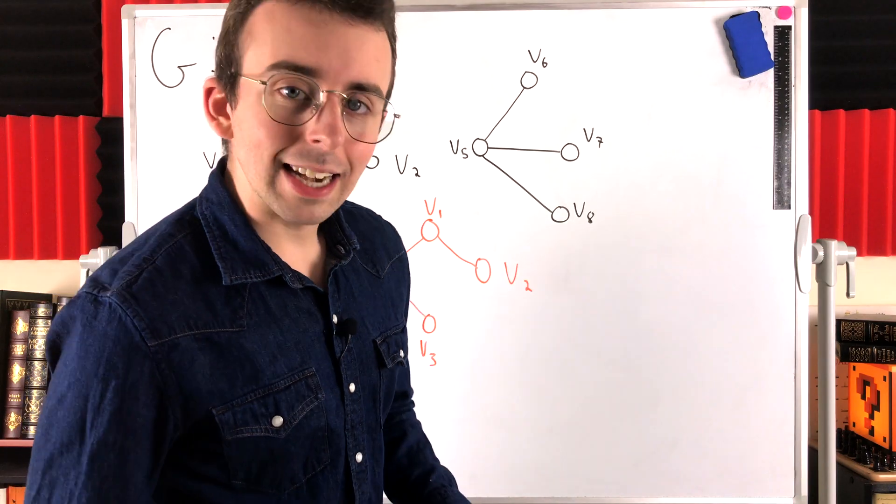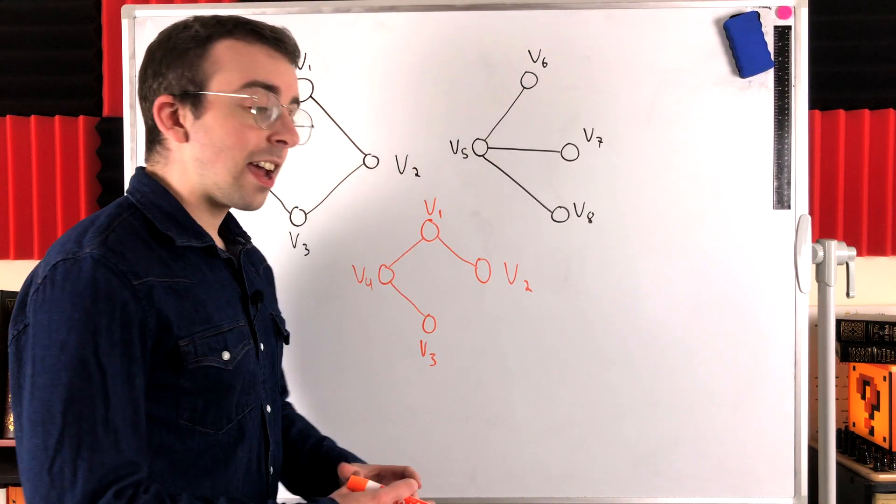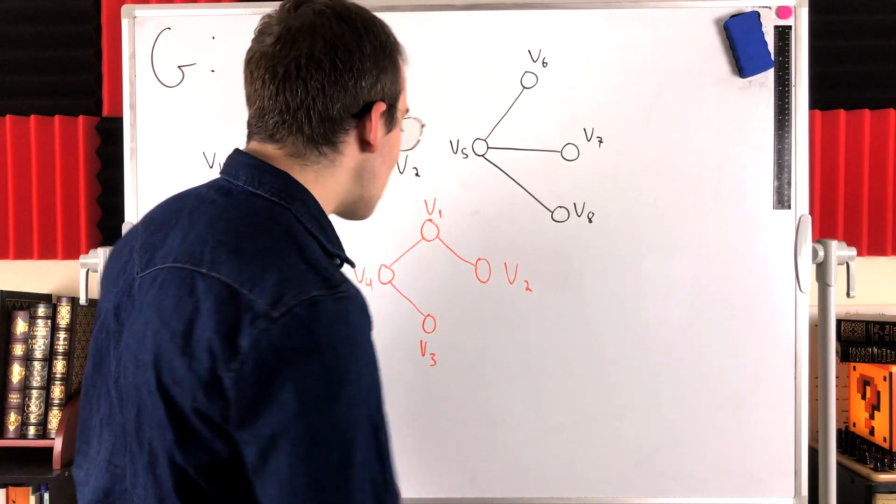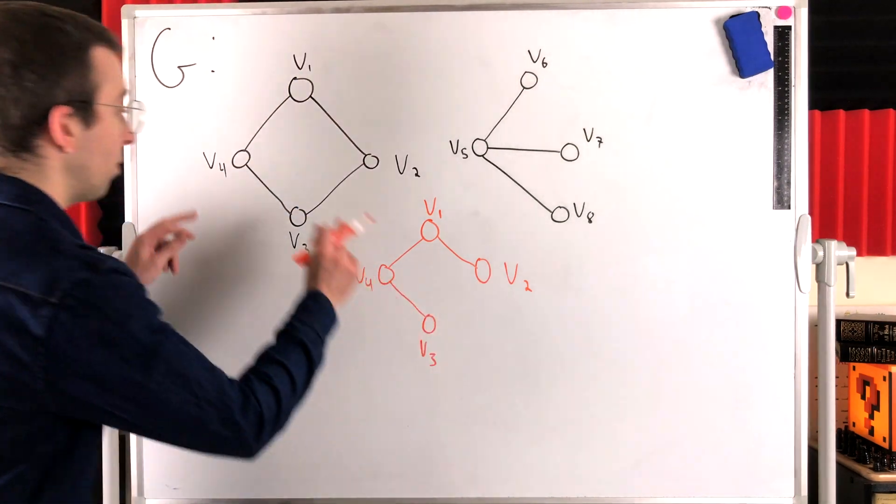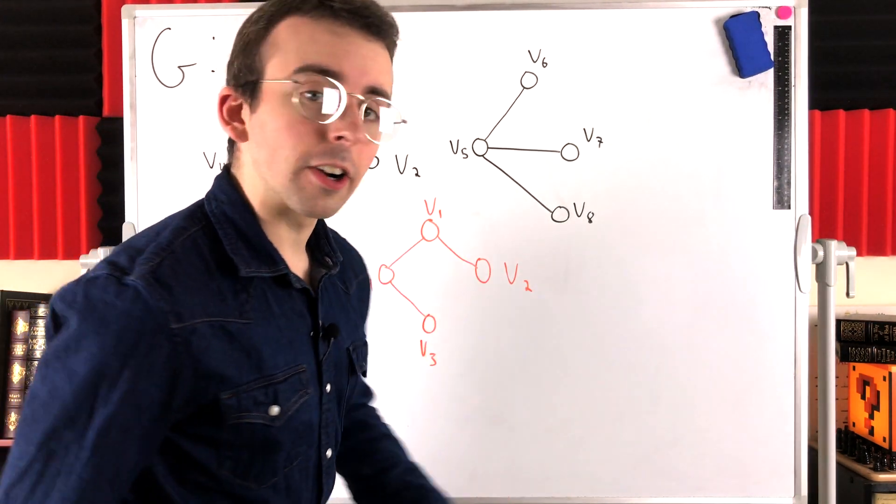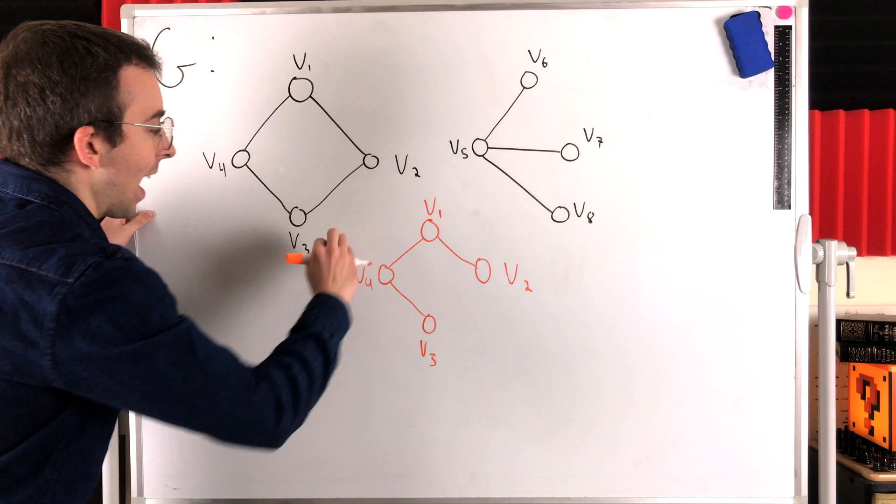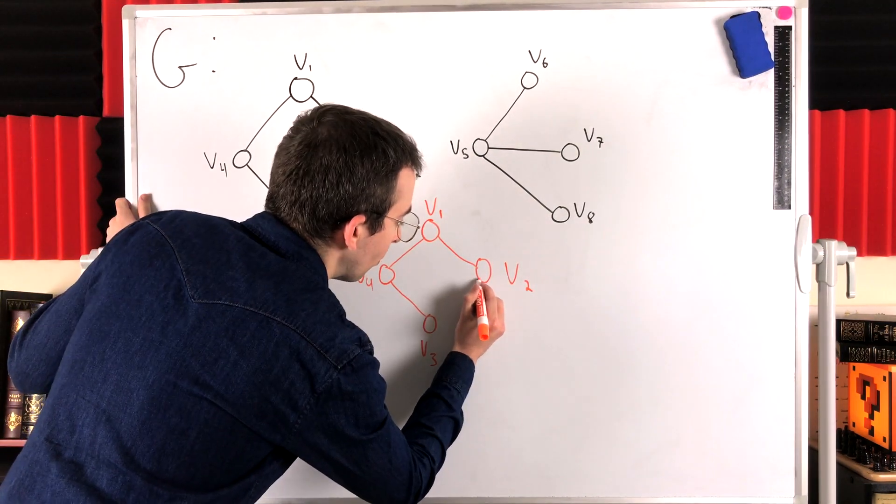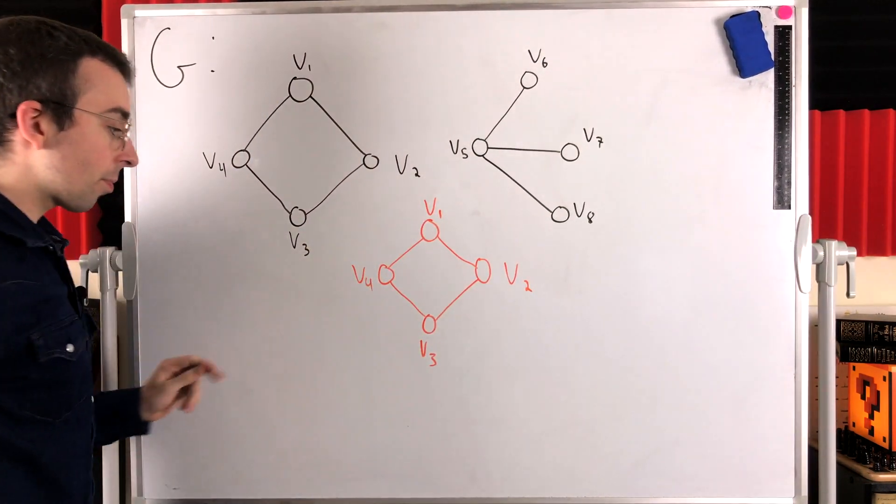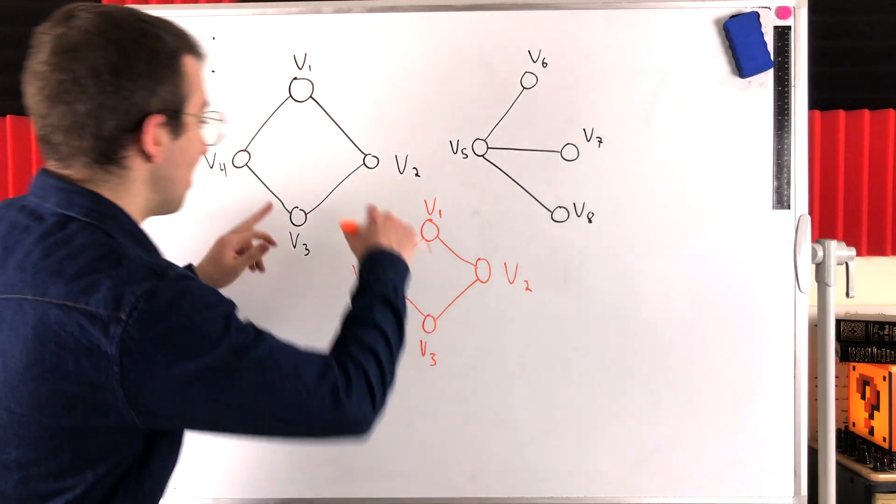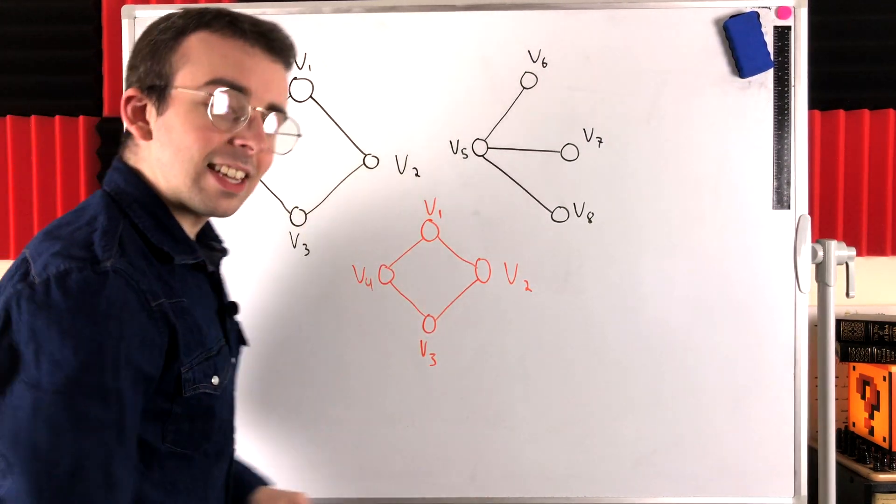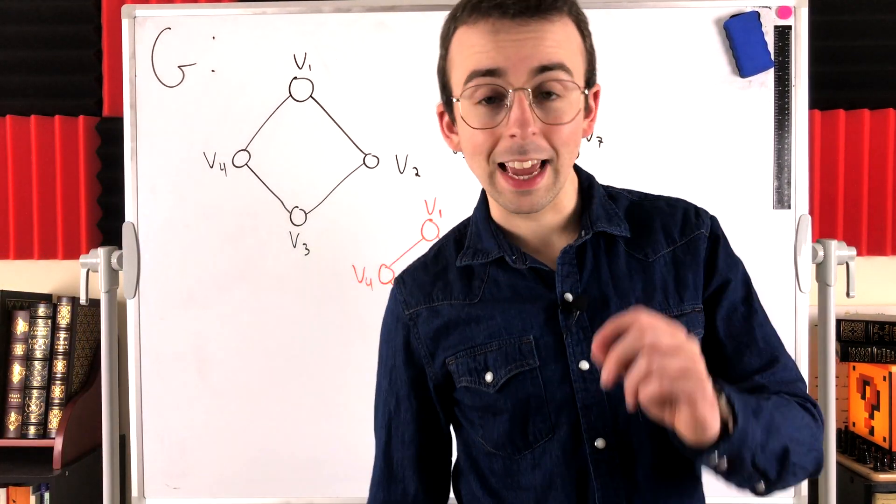Because there's a vertex or edge that we could add to this graph from G to get a bigger connected subgraph, we could add this edge here joining V3 and V2. Now, is this, this whole part here, is this a component of G? Yes, it is. It is a maximal connected subgraph of G.